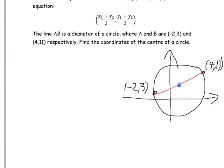If it's a diameter, it passes through the centre of the circle, which means that halfway between these two points on the diameter will be the centre of the circle.